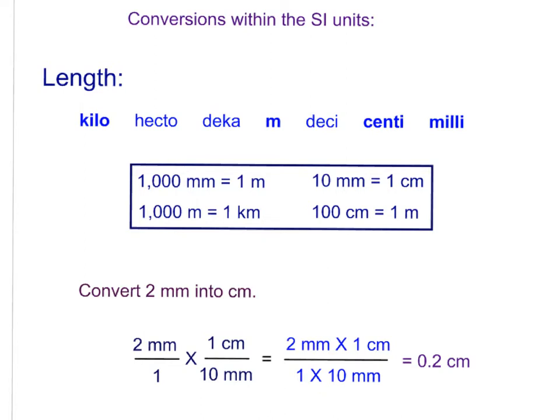Now the thing that makes SI units so wonderful and so easy to work with is that they are based on multiples of 10. SI units are not more precise than English units but they are a lot easier to work with.